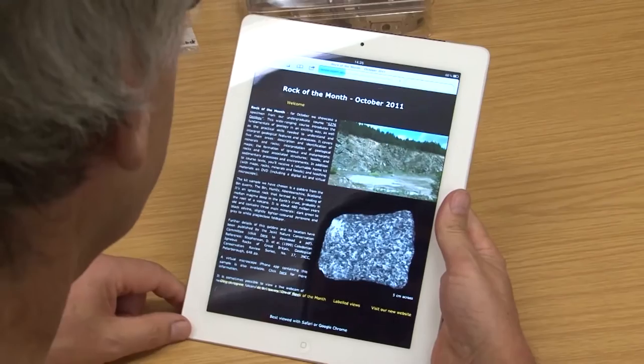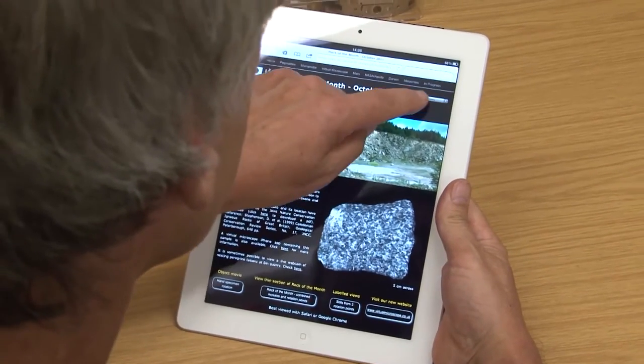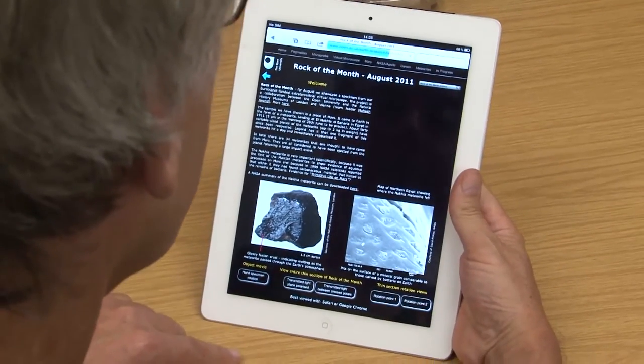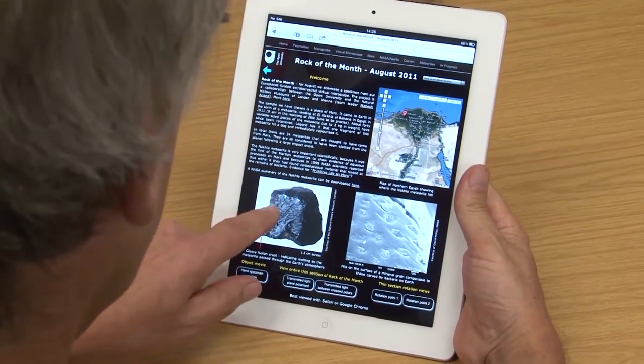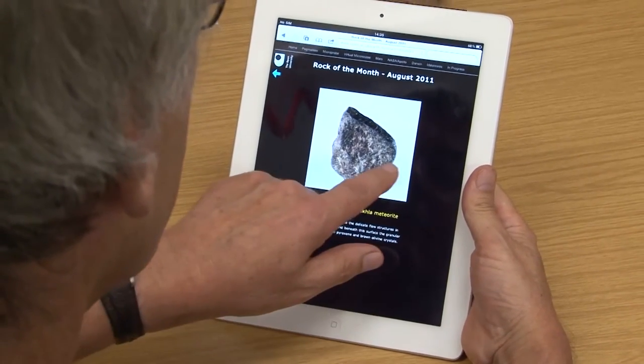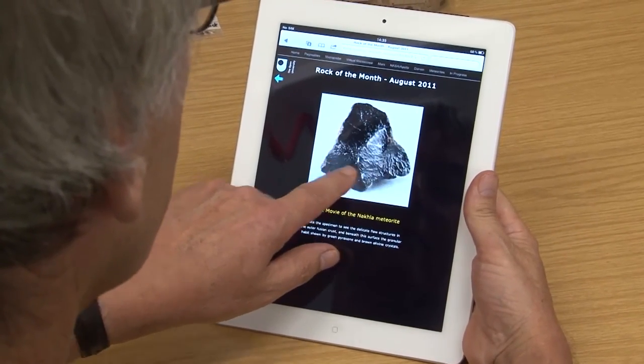Exploring science through a screen makes it accessible. The Open University, working with partners in the UK and overseas, can transform the learning of practical science and bring students closer to authentic frontiers.